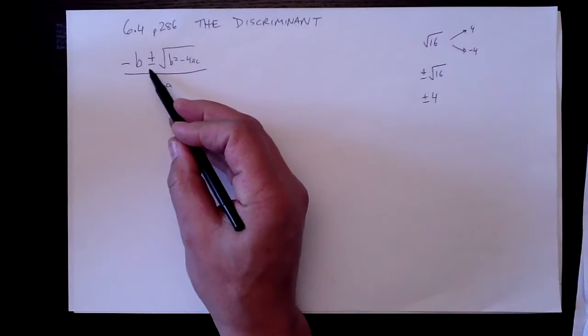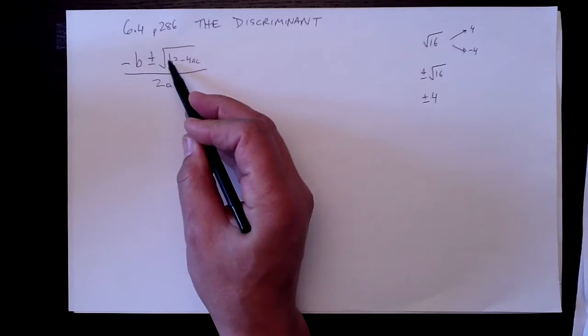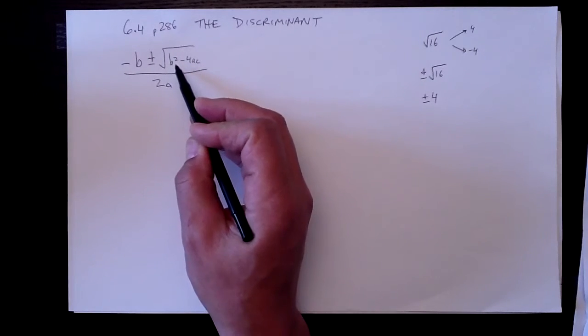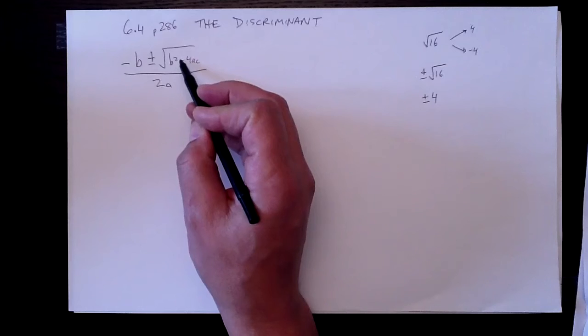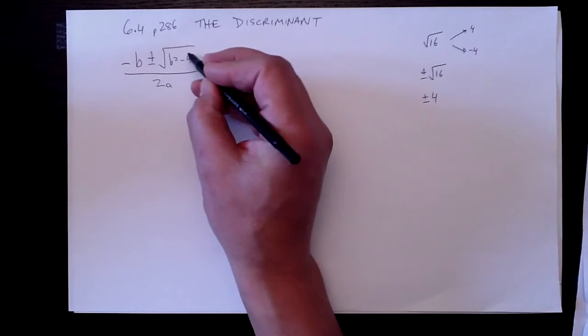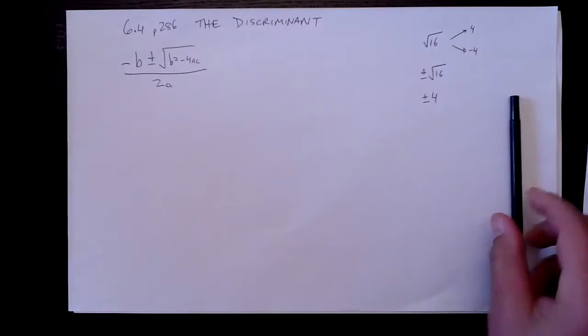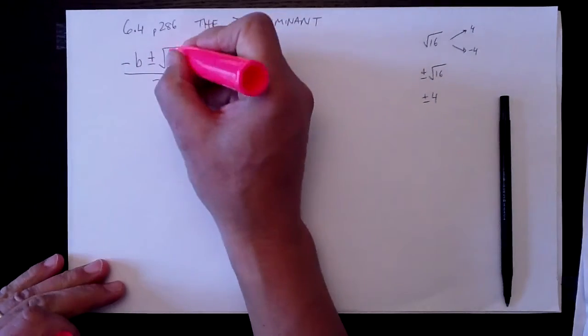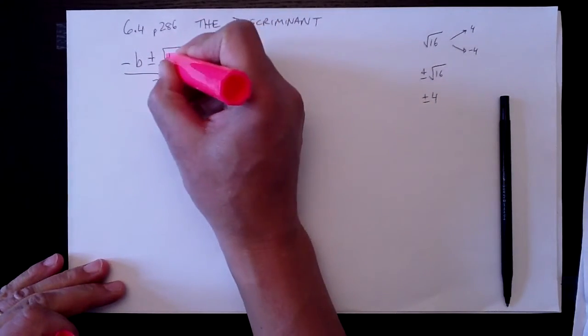Now over here in the quadratic formula, we have the plus or minus in front of the square root to remind us of that very fact. You could add it, you could subtract it as long as it's a positive number to begin with. So this thing in here, I'll just highlight that in pink. This thing in here can tell us stuff.